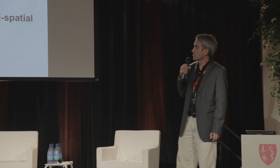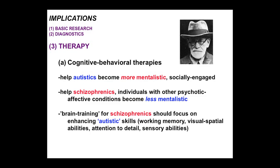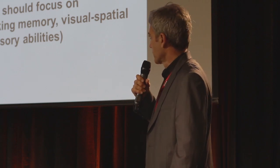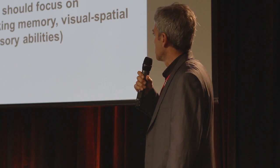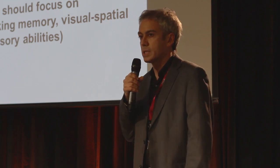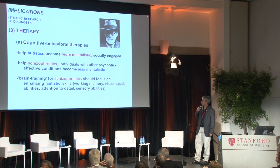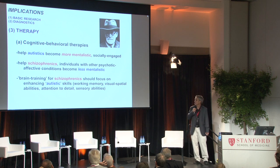What about cognitive behavioral therapies? We all know that autistics should be taught to become more mentalistic and socially engaged. By this reasoning, we should help schizophrenics and others with these conditions to become less mentalistic — to become relatively more autistic in their thinking. There are also direct implications for brain training, a very large and growing industry. For schizophrenics, they should be specifically trained in skills which are highly developed in autistics — working memory, visual-spatial ability, attention to detail, and sensory abilities — which should most directly bring them back towards the middle of the spectrum. The framework tells you exactly what to do to train them.